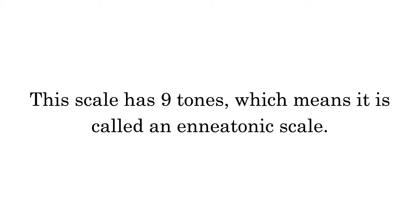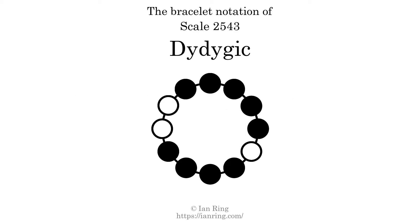This scale has 9 tones, which means it is called an enneatonic scale. This is a bracelet notation diagram of scale 2543. The shaded circles represent tones that appear in the scale, and they are read clockwise, starting at the top.